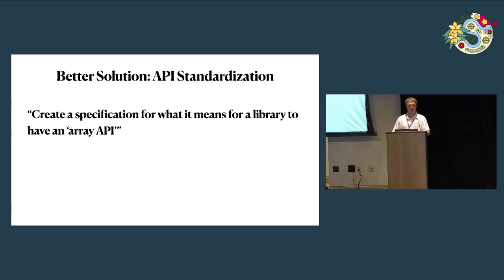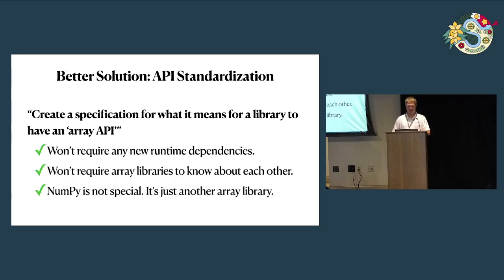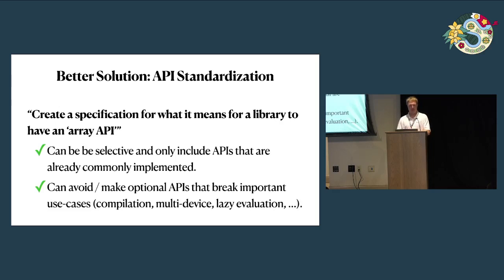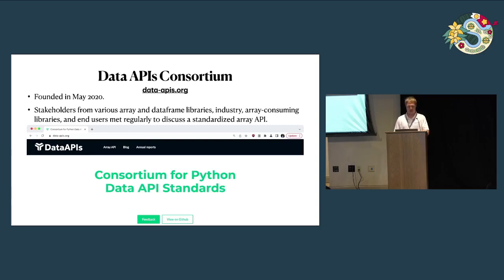There's a much better solution: let's create a specification for what it really means for a library to have an array API. This won't require any runtime dependencies. Array libraries won't need to know about each other at all, and NumPy itself is not special — it's just another array library. We can also be very selective and only specify APIs that are commonly implemented and avoid things that break important use cases like compilation. So back in May of 2020, the Data APIs Consortium was formed with people from various array and dataframe libraries from industry, array-consuming libraries, and end users.